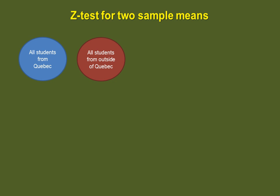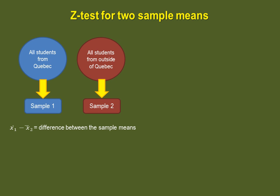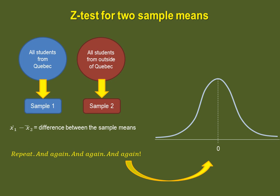Do you remember the sampling distribution of means? There you took many samples from one population, calculated all of the sample means, and then did a distribution of those means, which took on the shape of a normal distribution. The same kind of idea applies here. When you take pairs of samples from two populations, you can take the difference between the two sample means. Repeat this a sufficient number of times and you can plot the sample mean differences. If both populations have the same mean, most of your differences will be equal or very close to zero. Due to chance, it's possible you'll get some greater differences, so your distribution of differences will resemble a normal distribution.